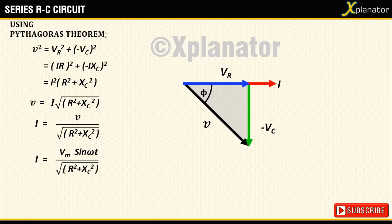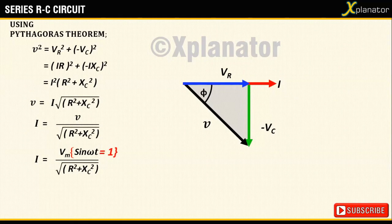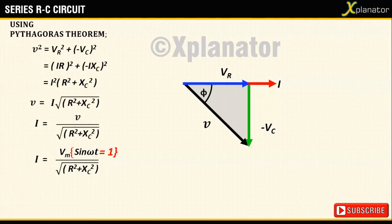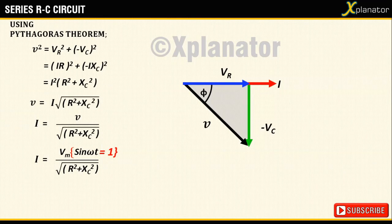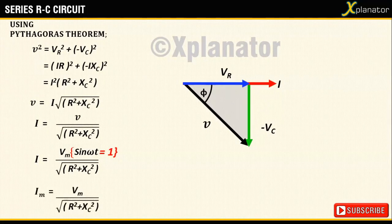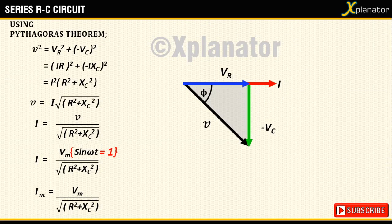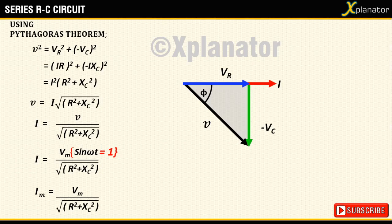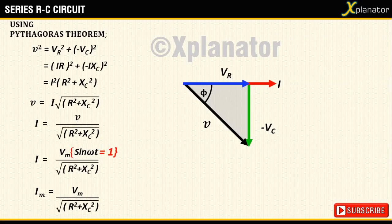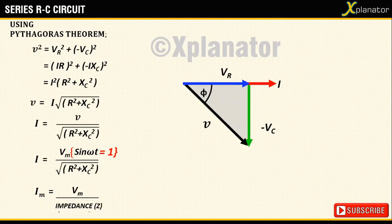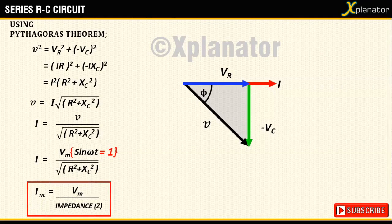Substitute V as Vm sin ωt and you see that when sin reaches the maximum value, the voltage and hence the current will also reach their maximum values. So, the value for maximum current, Im, is given as Vm divided by square root of R² plus Xc² where the term square root of R² plus Xc² is called as impedance of the circuit denoted by letter Z.